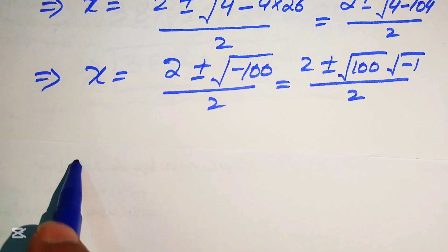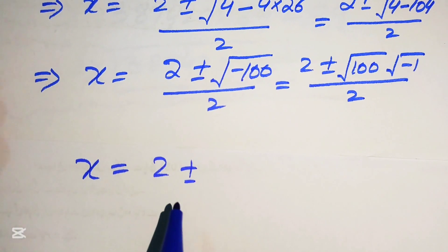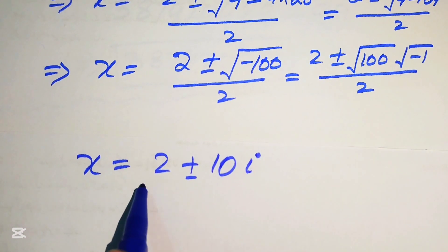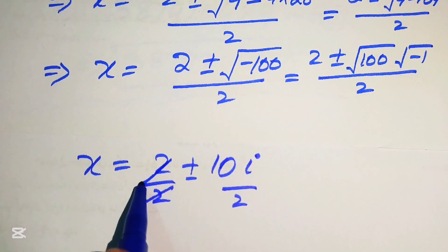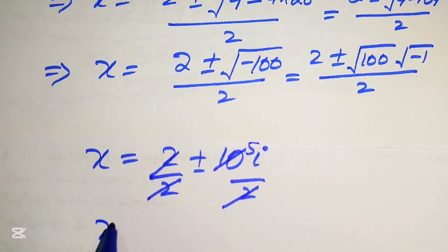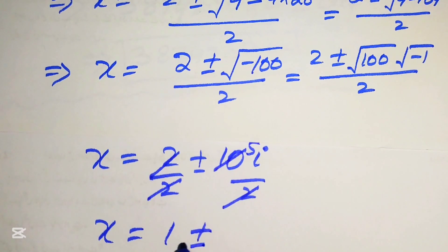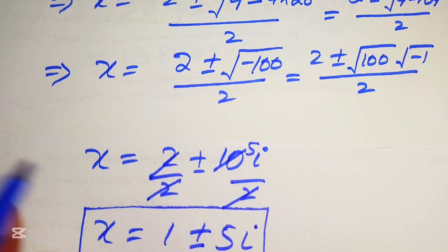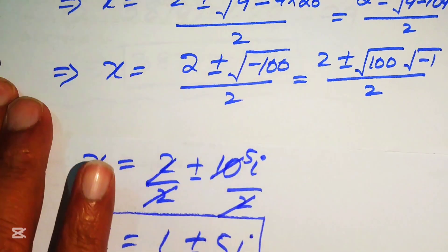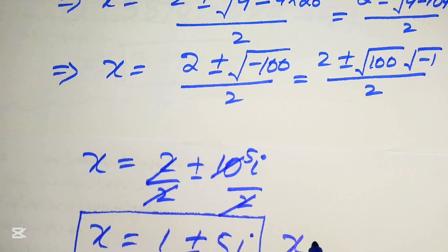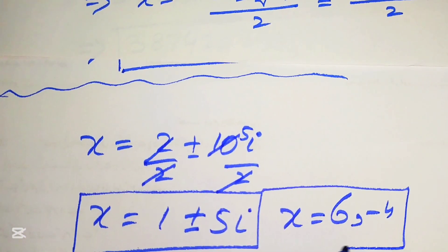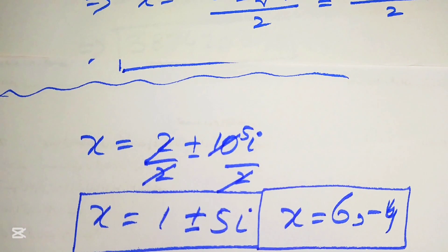So x equals 2 plus or minus 10 times iota, divided by 2, which gives x equals 1 plus or minus 5 iota. These two roots are complex roots, while the first two roots x equals 6 and x equals minus 4 are the real roots. That is the final answer. Thank you so much for watching — please subscribe for more videos.